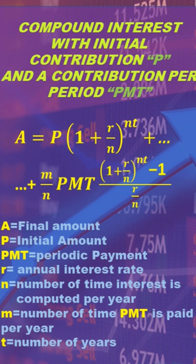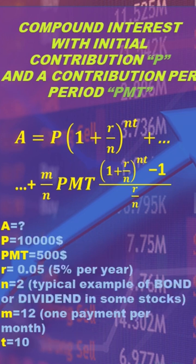A equals final amount, P equals initial amount, PMT equals periodic payment, r equals annual interest rate, n equals number of time interest is computed per year, m equals number of time PMT is paid per year, t equals number of years.